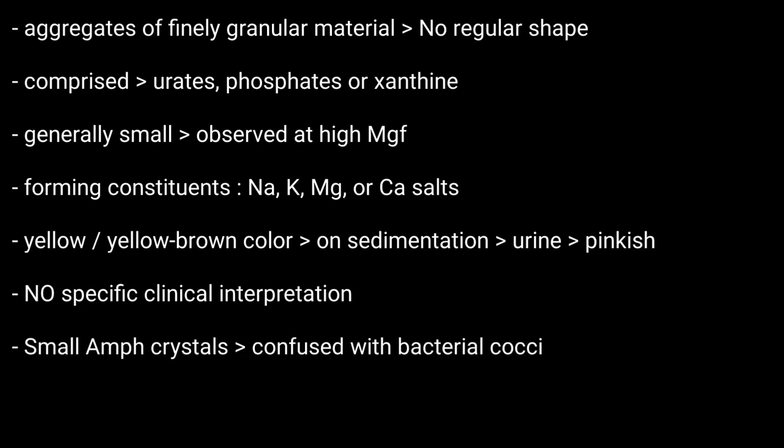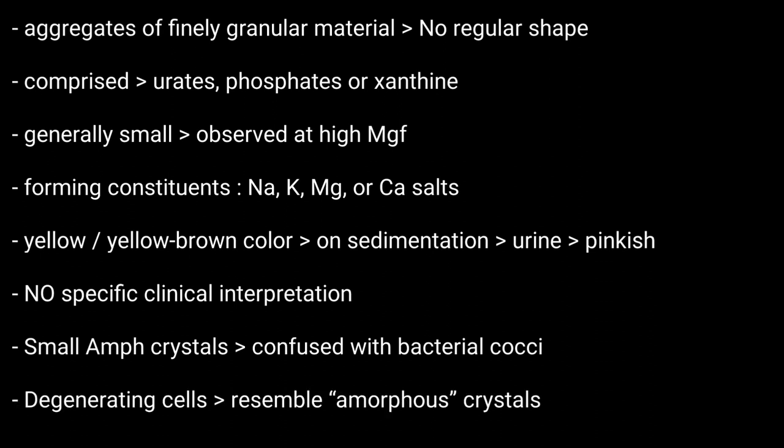Small amorphous crystals can be confused with bacterial cocci in some cases but can be distinguished by Gram staining. Degenerating cells can also resemble amorphous crystals, so for a clearer picture we need to look for specific types of crystals to diagnose any particular disease.